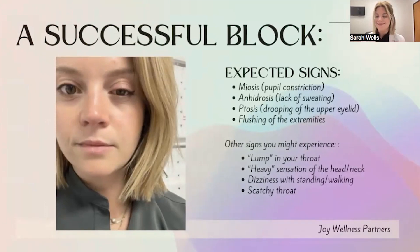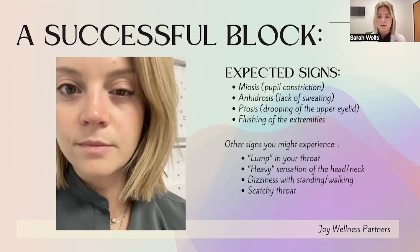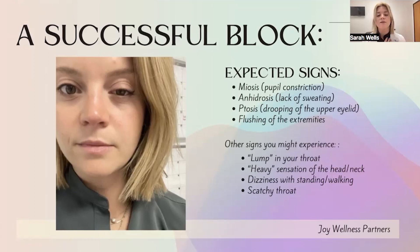After the block, these are the expected signs of a successful procedure: miosis, anhidrosis, ptosis, and flushing — including flushing of the extremities and some nasal stuffiness on the affected side. You can see the drooping eyelid and constricted pupil. Other signs include a marshmallow-like sensation in the throat, a heavy sensation in the head and neck, and possible dizziness with standing or walking, so we're always cautious with that, along with a potentially scratchy throat.